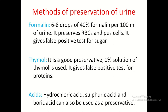Formalin — 6 to 8 drops of 40% formalin per 100 ml of urine — preserves RBCs and casts, making it helpful for microscopic examination. However, its disadvantage is that it may give a false positive test for sugar. Thymol — 1% solution — is a good preservative, but its disadvantage is false positive test for proteins. Various acids can also be used as preservatives, such as hydrochloric acid, sulfuric acid, and boric acid.